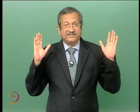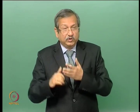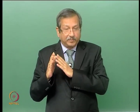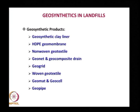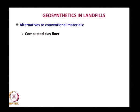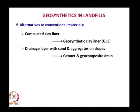Geogrids are also used to create reinforced earth for side embankments above the landfill, allowing use of inferior fill material and creation of steeper slopes. Woven textile is used in the final cover layer. Geomat is used for erosion control on the outer periphery of the boundary wall. Geopipe is used in leachate collection. Conventional drainage sand and aggregate layers are replaced by geonet and geocomposite drains.